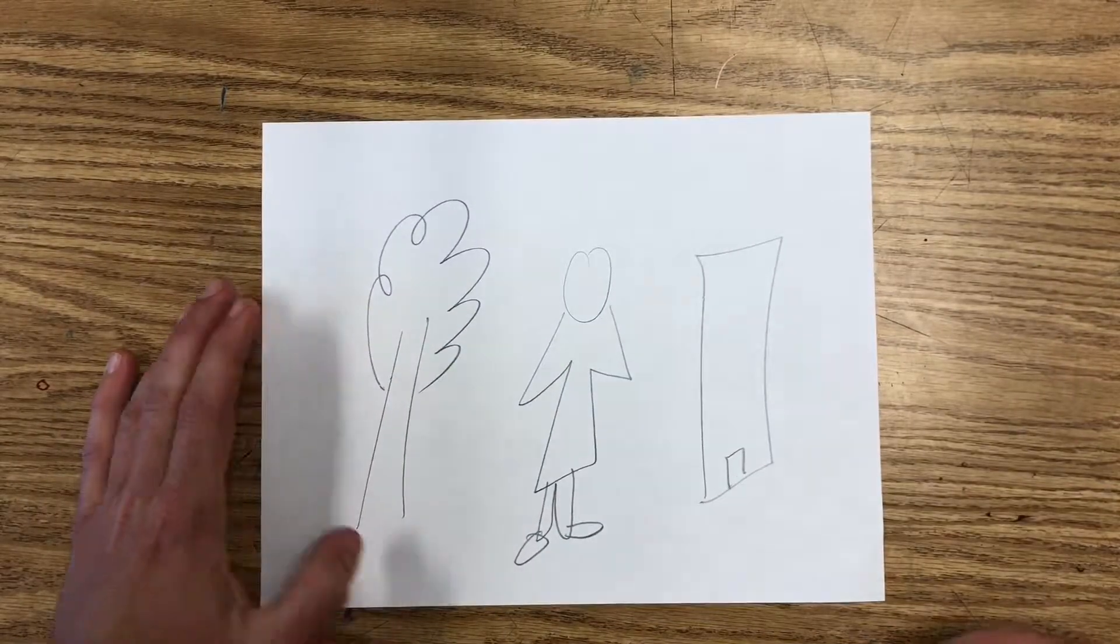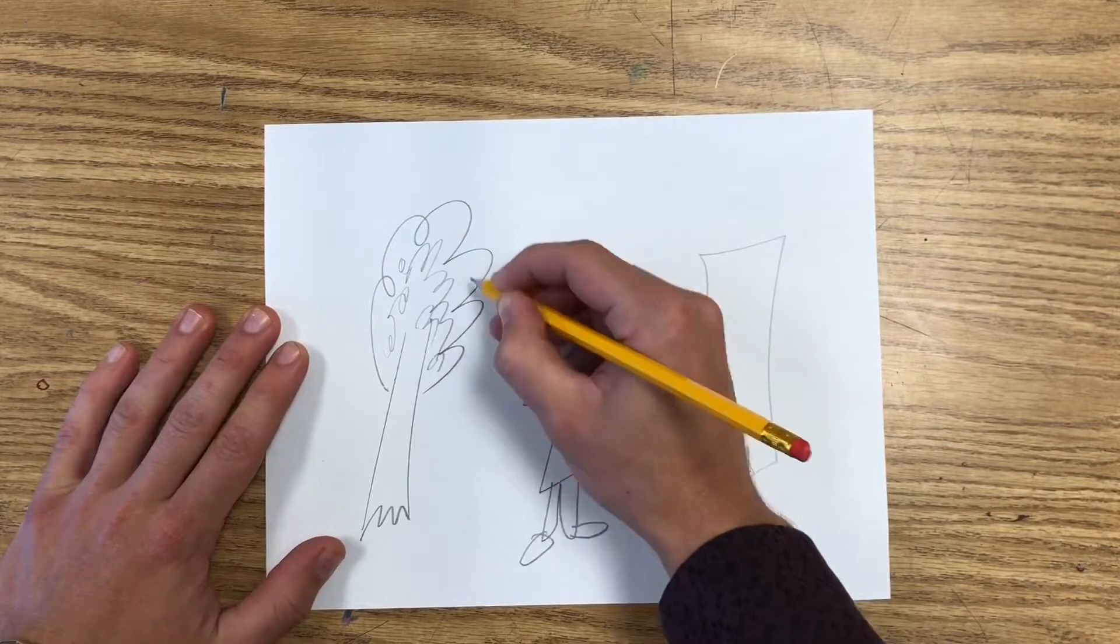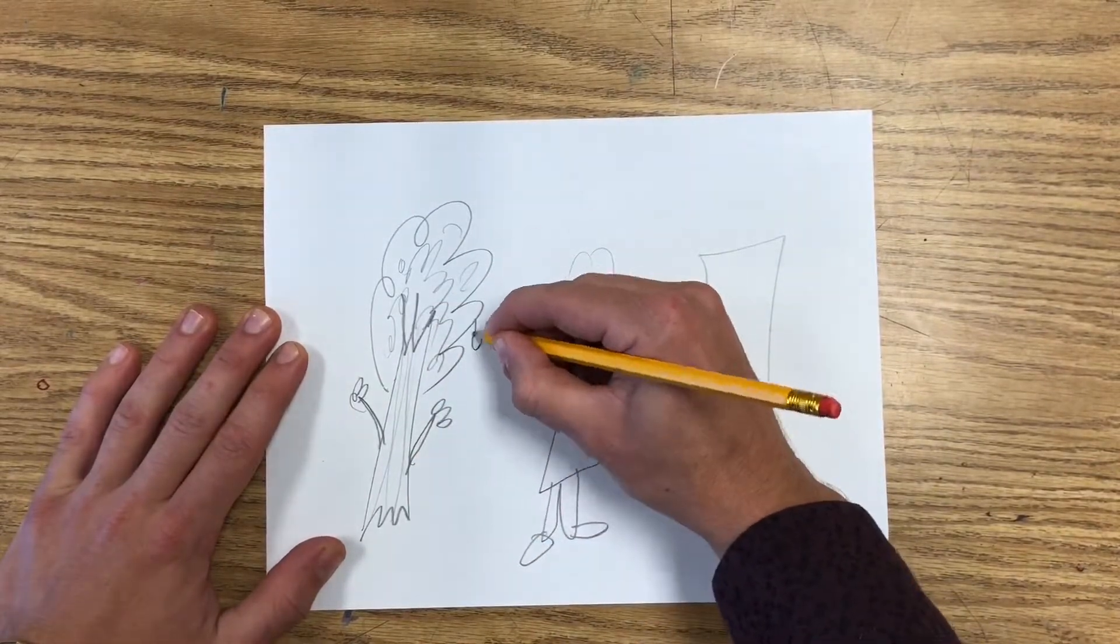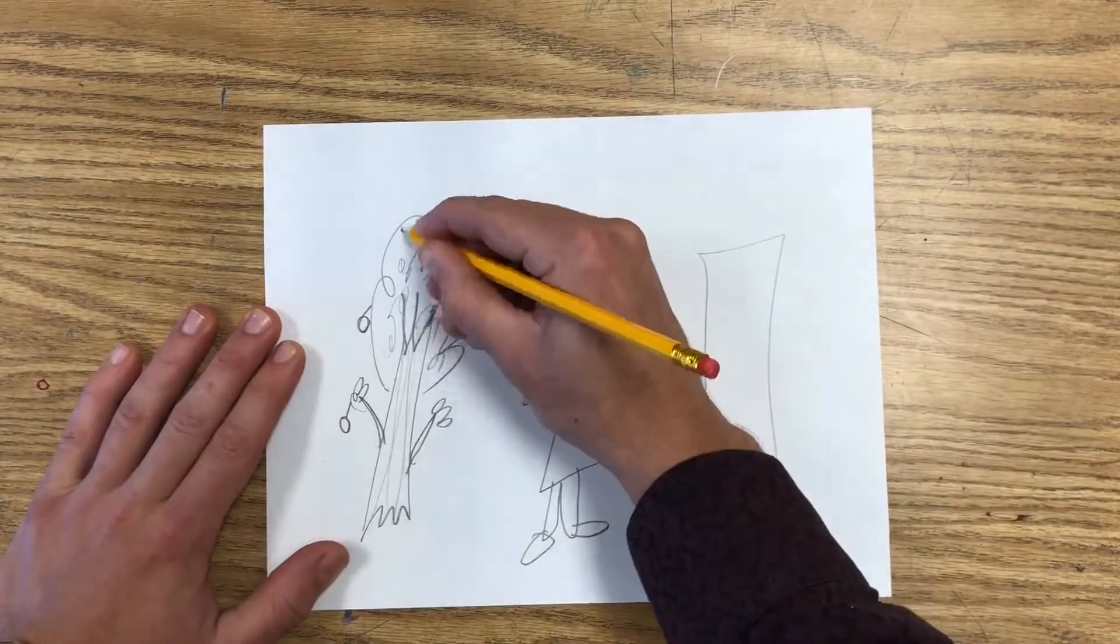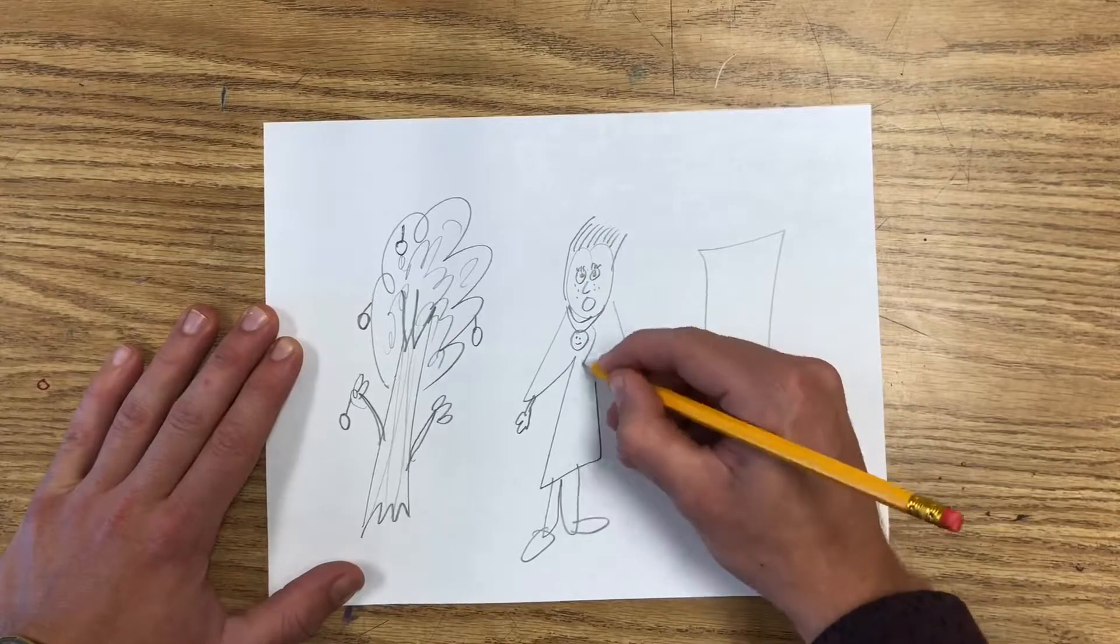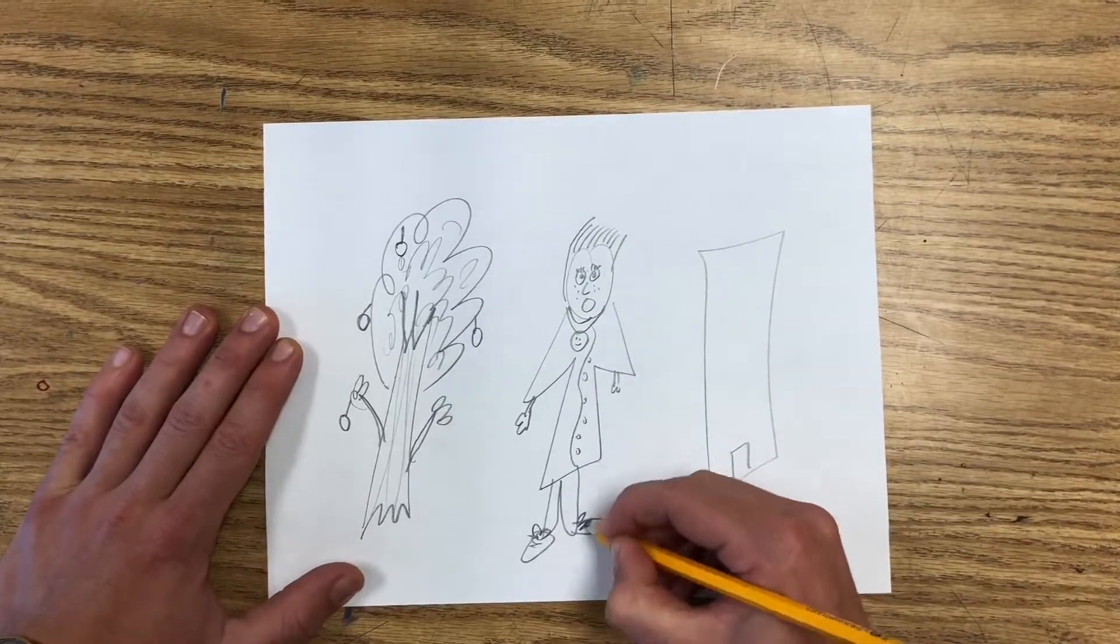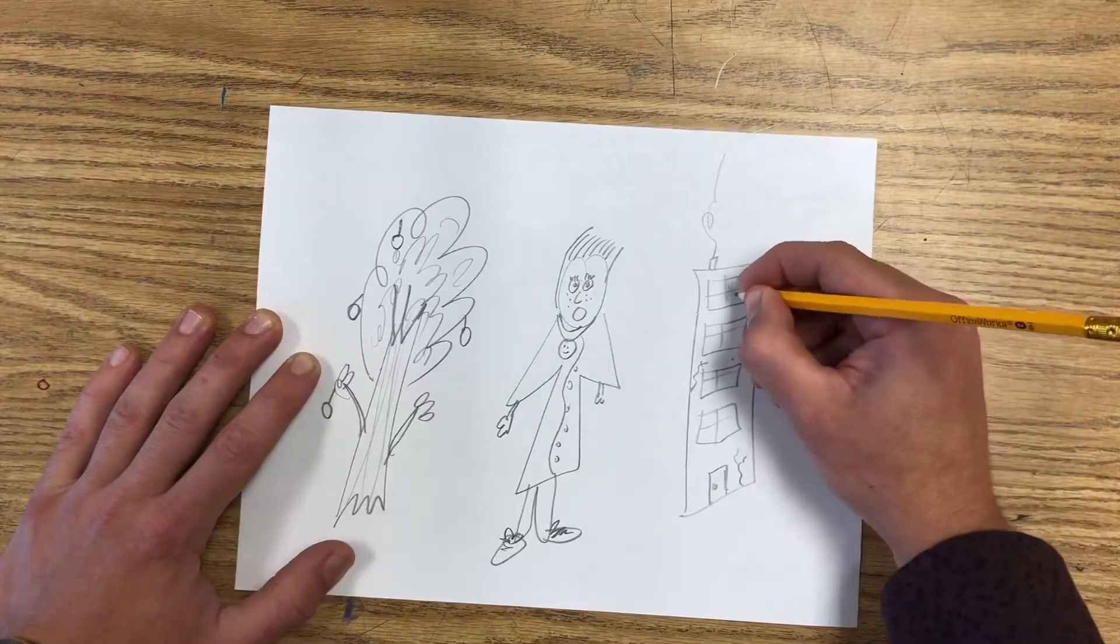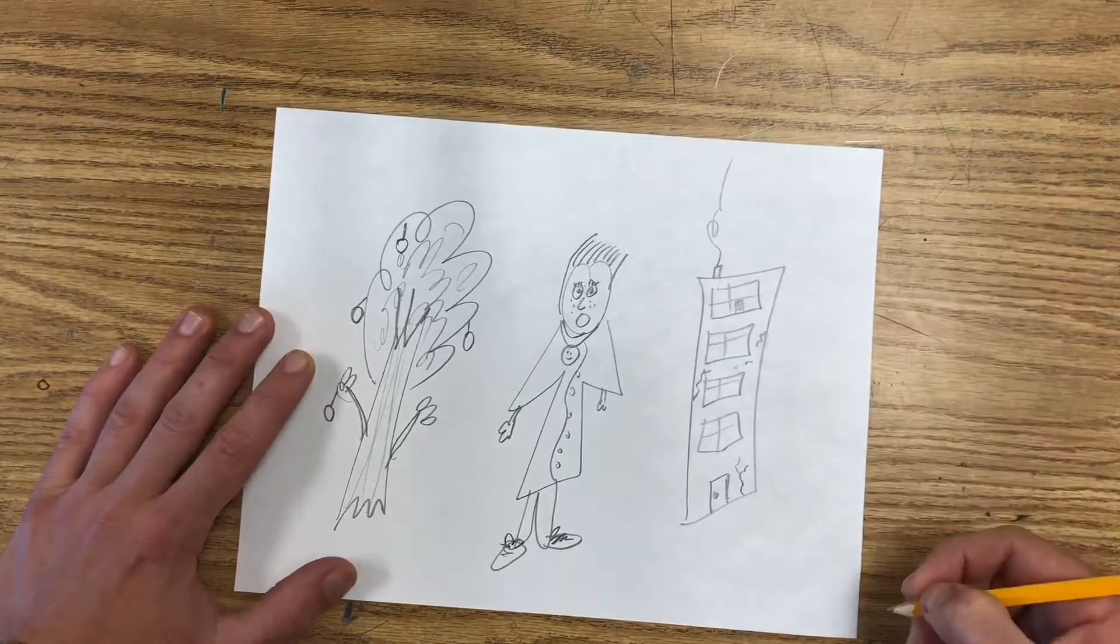The sixth and final sketch skill is to put details on your subjects. A tree is a subject. Put leaves, apples, bark texture. Those are details and will bring your subjects to life. Hair, outfits, jewelry on a person or bricks, smokestacks and cracks in the concrete on a building are all examples of details.